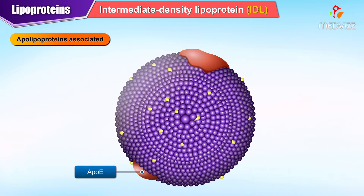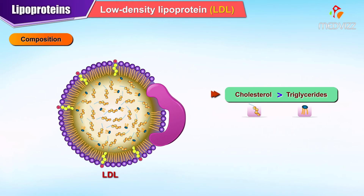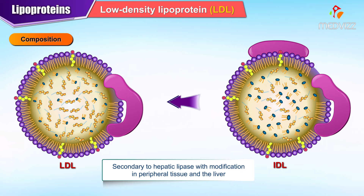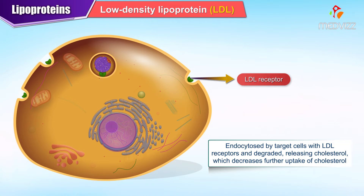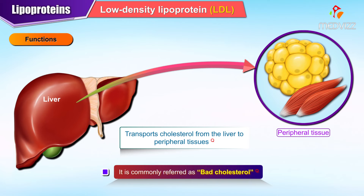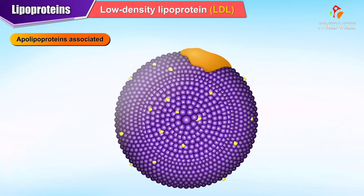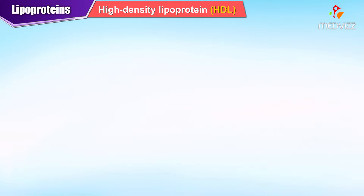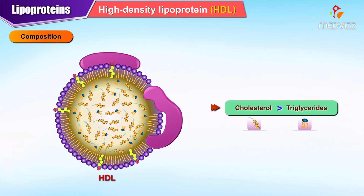Low density lipoprotein, LDL, is composed more of cholesterol than triglycerides. LDL is formed from IDL secondary to hepatic lipase with modification in peripheral tissue and the liver. It is endocytosed by target cells with LDL receptors and degraded, releasing cholesterol which decreases further uptake of cholesterol. It transports cholesterol from the liver to peripheral tissues and is commonly referred to as bad cholesterol. Apolipoproteins associated are ApoB100.